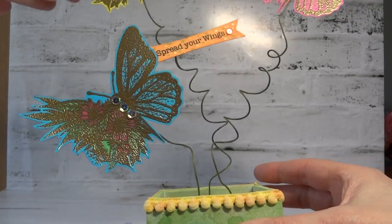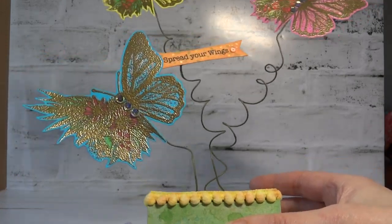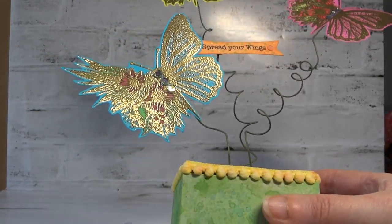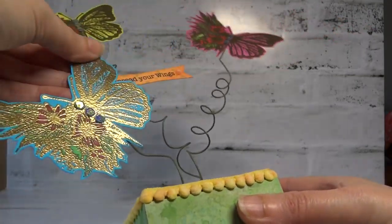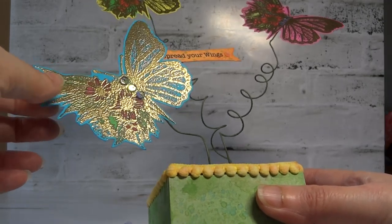The gold embossing powder is also Pearlywinks, and you can see that's a really nice powder there, lovely gold finish. I went in with a paintbrush and some of the Pearlywinks inks.